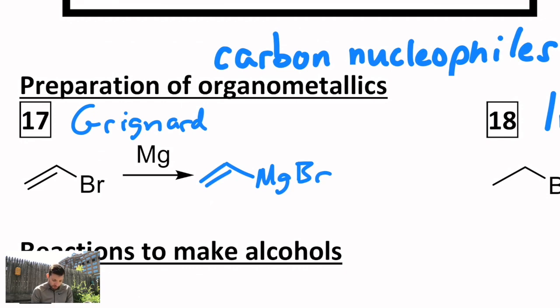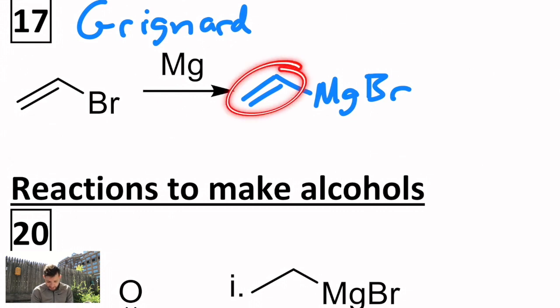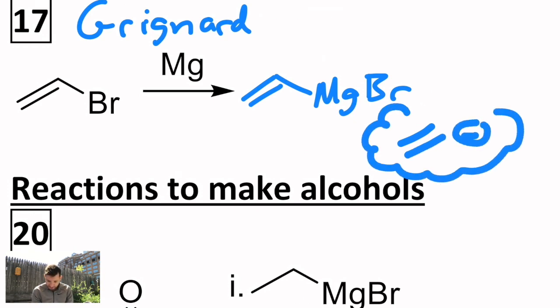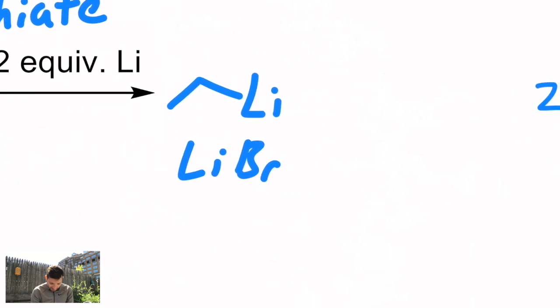So this first one, this Grignard reagent, that's a vinyl group. That's a two-carbon alkene attached to a metal. So I think of it as if it's a vinyl anion. When I see vinyl Grignard, I'm thinking vinyl anion. Right next to it, when I see ethyl lithiate, I'm thinking as if I have an ethyl anion. That's how these things will react for us.